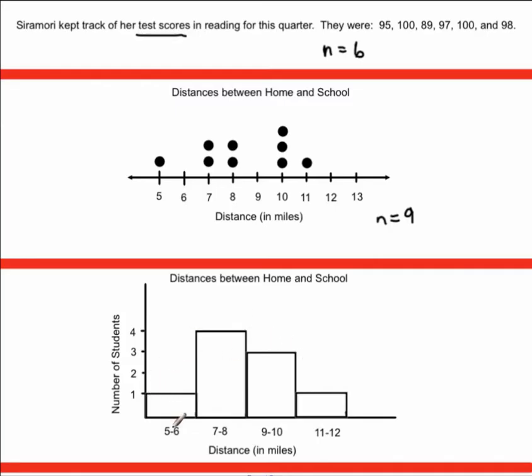So this one, these data points occurred 1 time, these data points occurred 4 times, these data points occurred 3 times, and these data points occurred 1 time. So we add up all of the occurrences that happened. So we have 1 plus 4 is 5, 5 plus 3 is 8, and 8 plus 1 is 9. So there are 9 observations here, n equals 9.